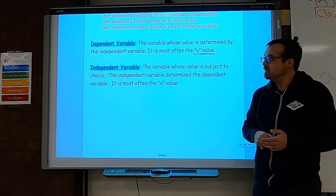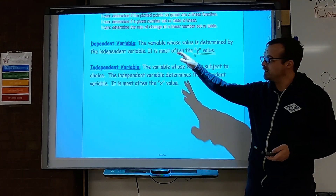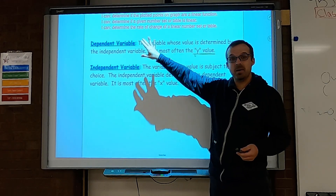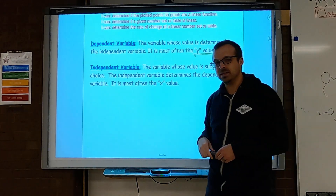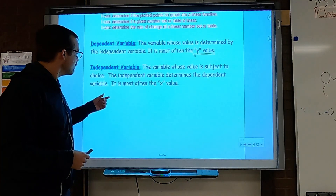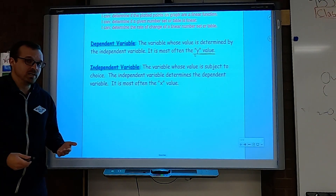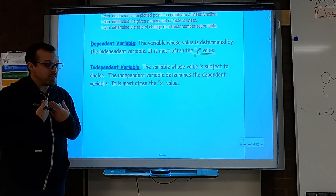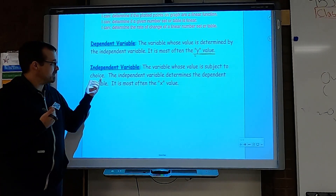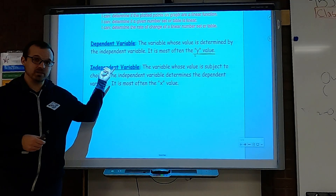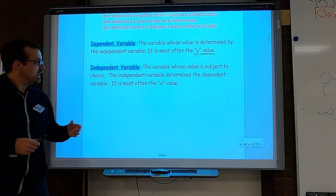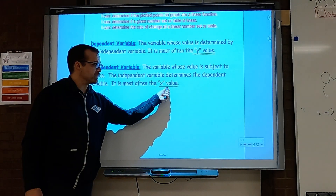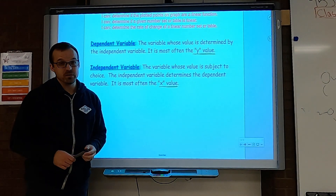The same thing kind of goes with math. Once you have an independent variable, the dependent variable depends on what that is. So let's look at what an independent variable is. It's the variable whose value is subject to choice — just like when you're independent, you get to have choices of your own. The independent variable determines the dependent variable. It is most often the x-value, or those domain values we talked about previously.